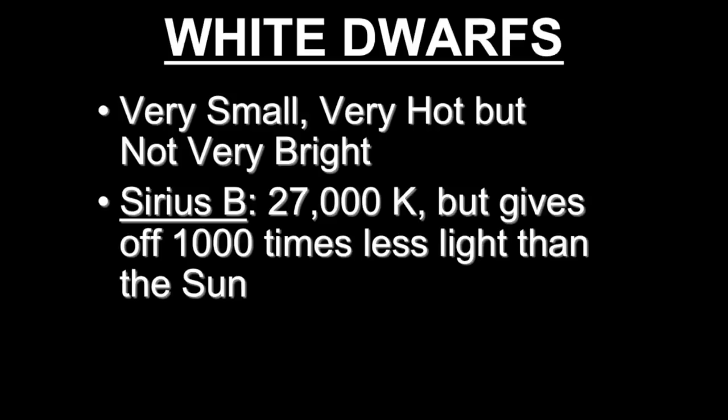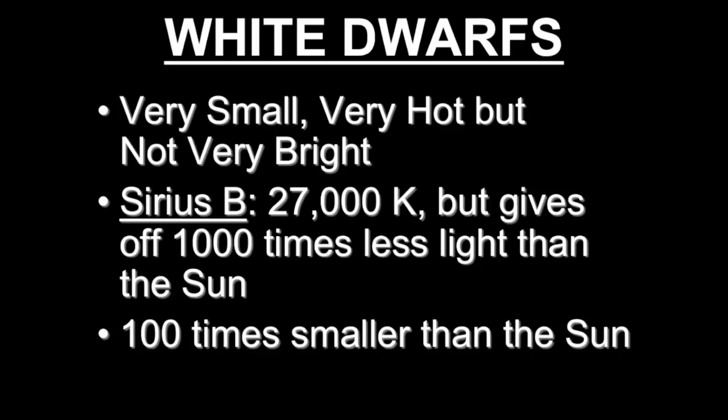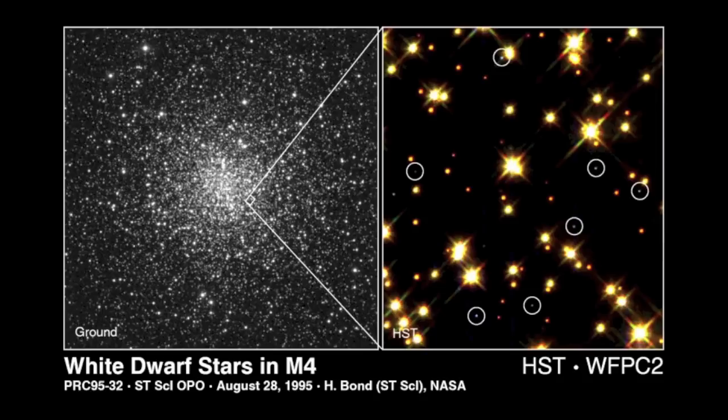Something that's comparable in size to a white dwarf would be the Earth. The Earth is also 100 times smaller than the Sun. White dwarfs are not very luminous at all. And so in order to see them, you need very sensitive telescopes. So for example, this is a star cluster called M4, and using a sensitive telescope such as the Hubble Space Telescope, we can start finding white dwarfs, and they're circled here. Very difficult to find.